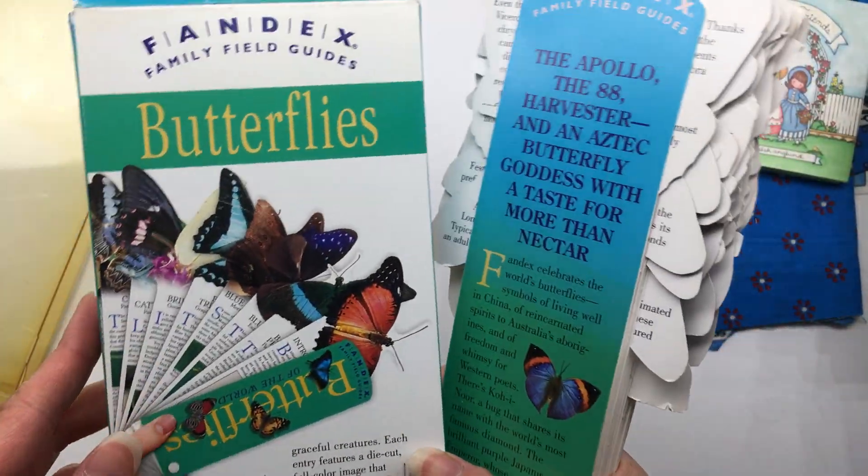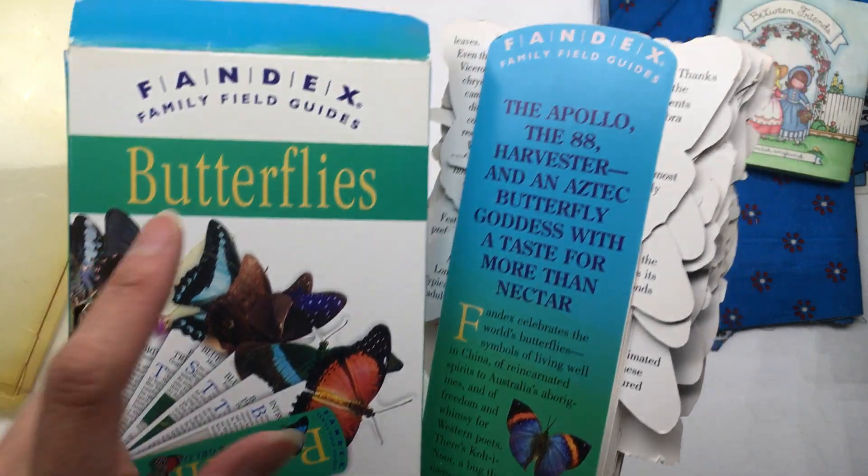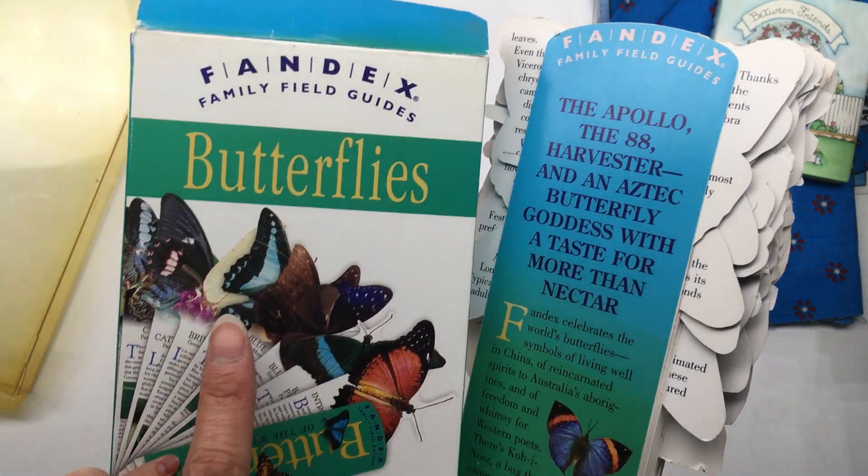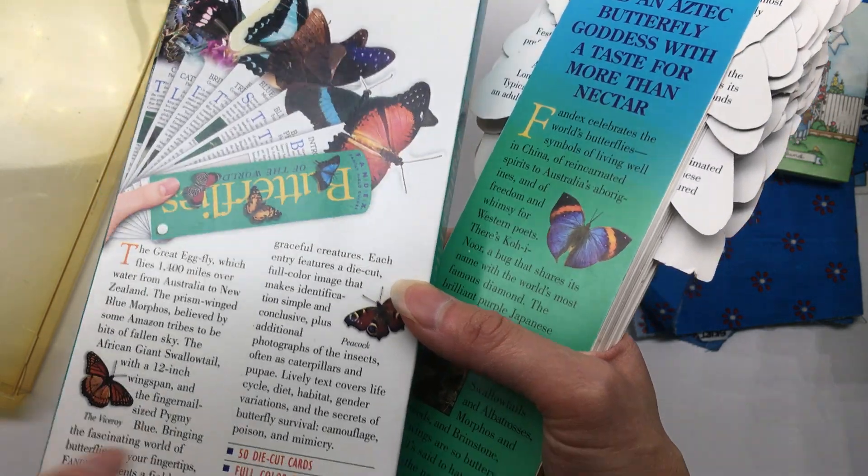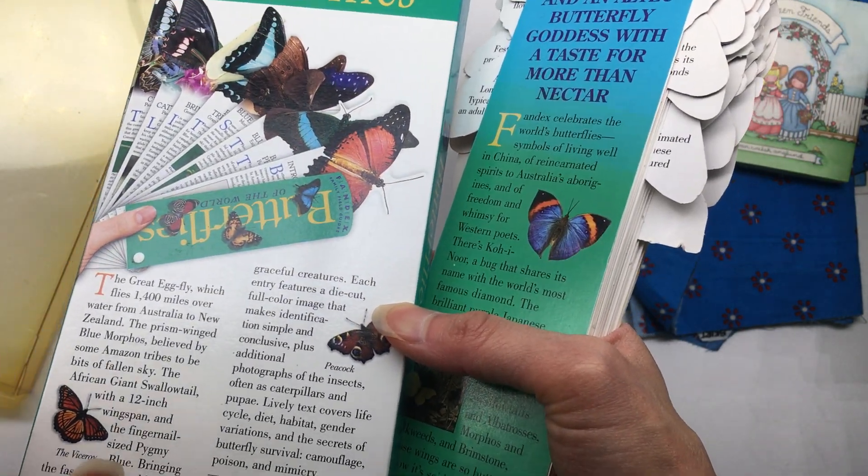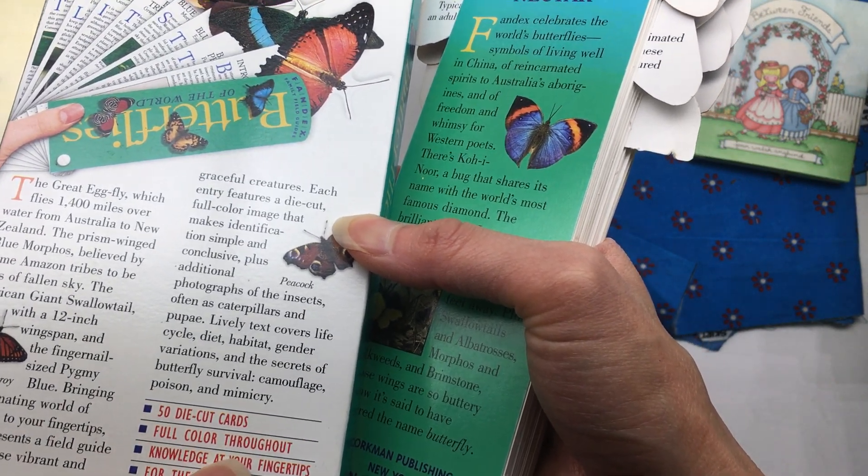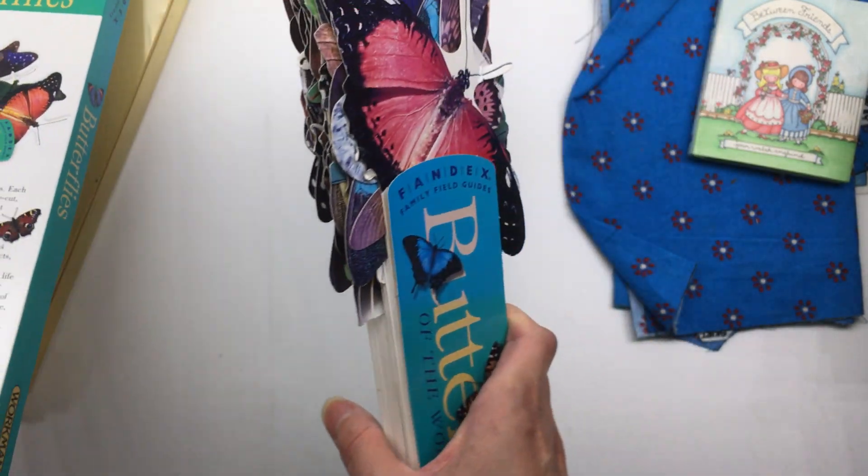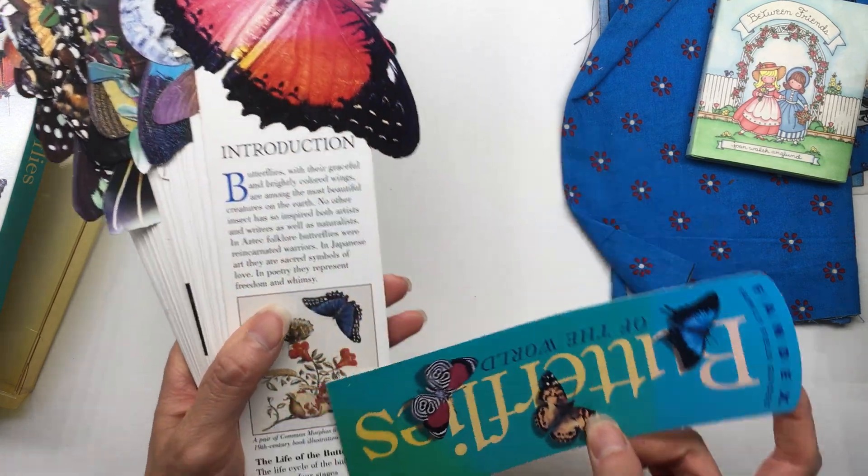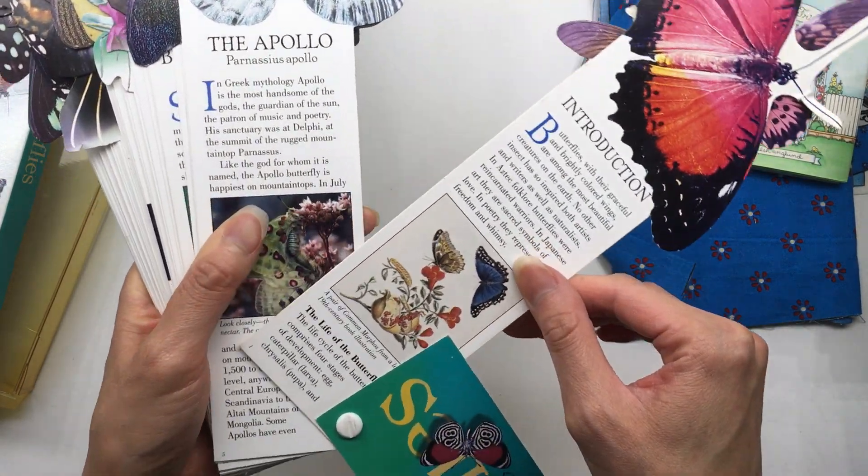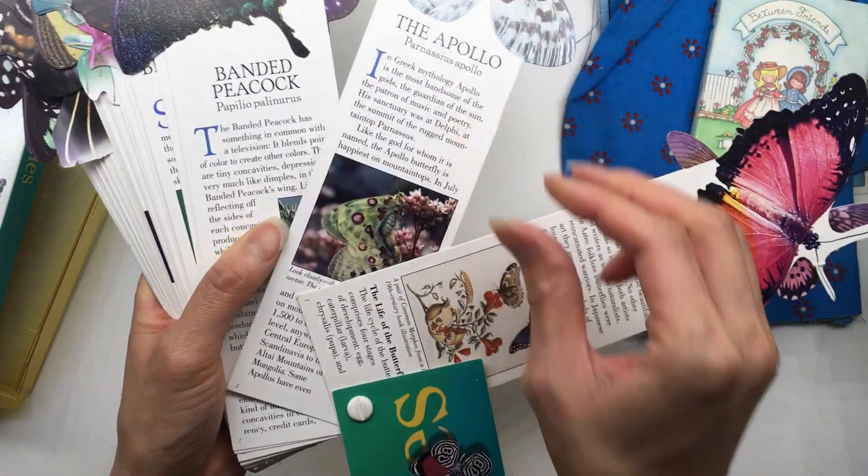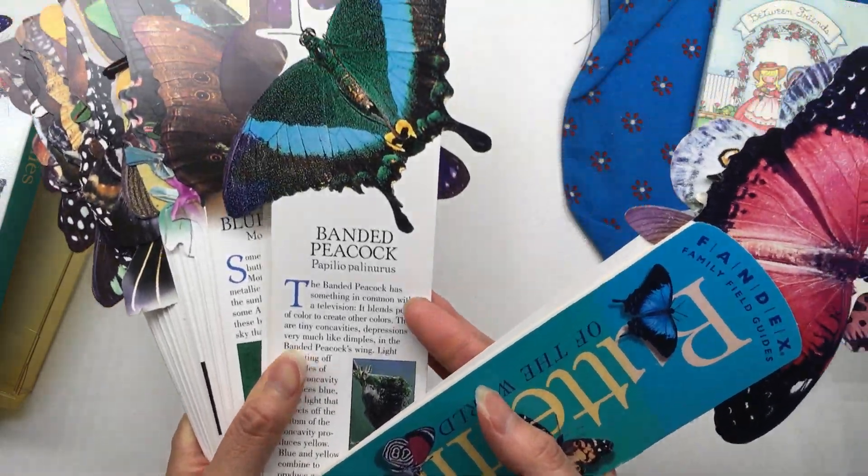So it even says where did it say it. Here's the box. So they're field guides, which is really cool because there's so many different kinds of butterflies you could actually learn from this, and there's 50 die-cut cards. So just the fact that they're die cuts is cool enough.